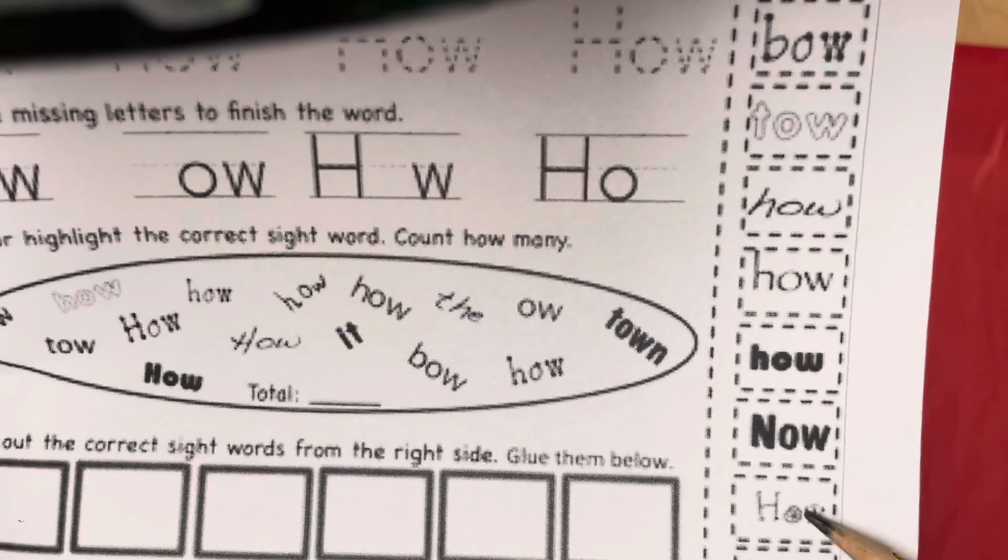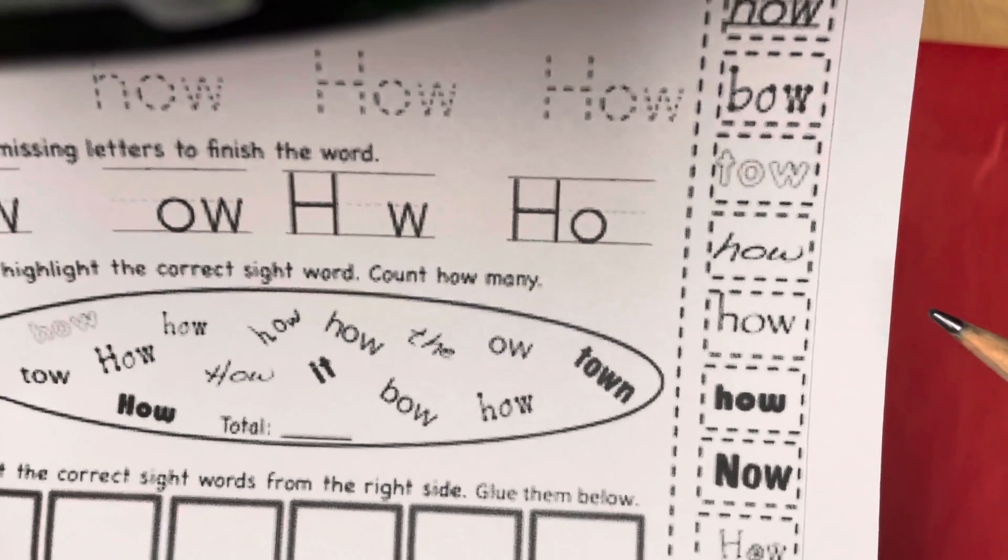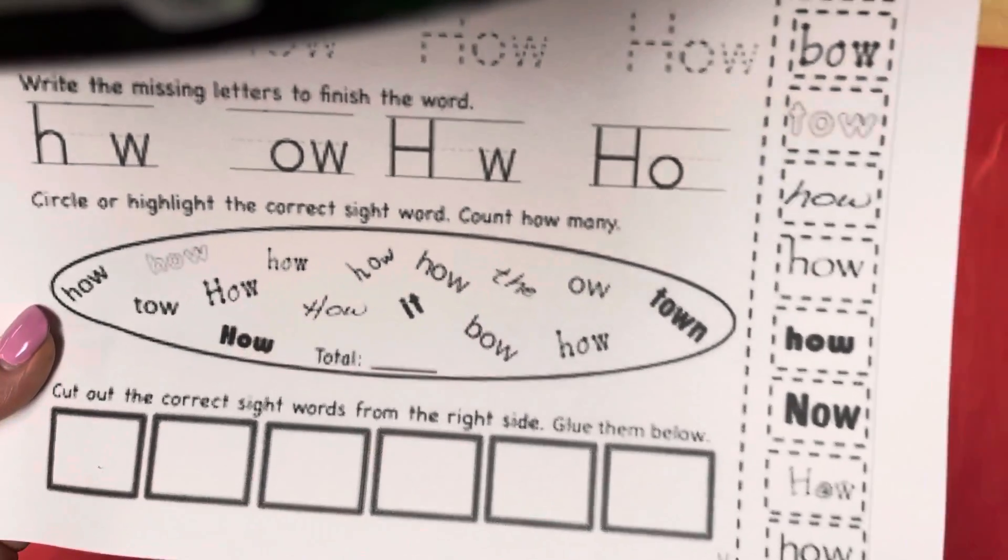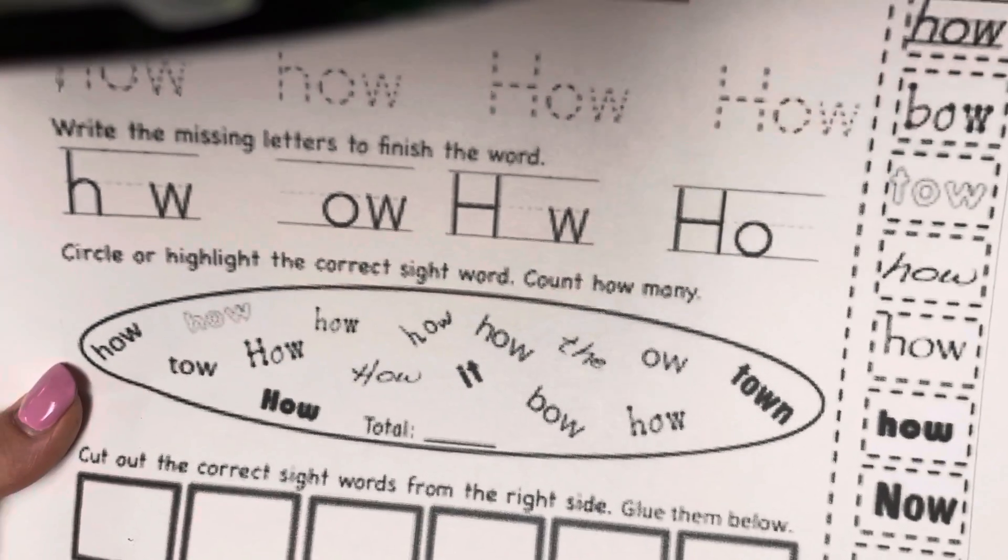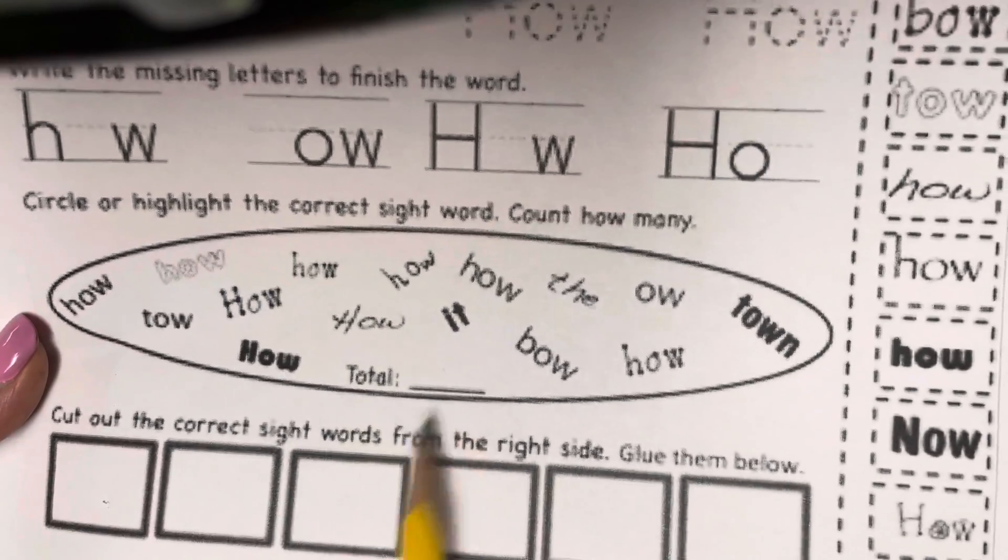But look, you have more. So you have one, two, three, four, five. Oh, you have six hows. I'm not going to show you them all. And one thing I skipped is once you circle all the hows, write the total right here.